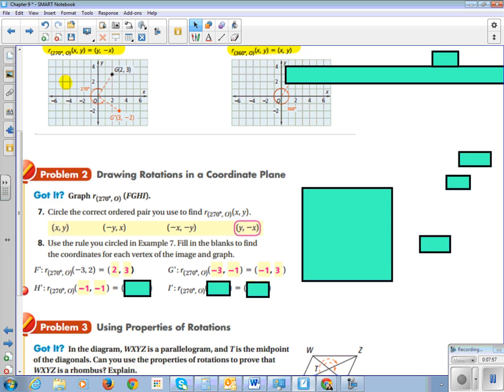Same for H, negative 1, negative 1. Then I change the sign of the second one. And then I is 0, 1. I flip those, and you can't make 0 negative, so it doesn't get the change.